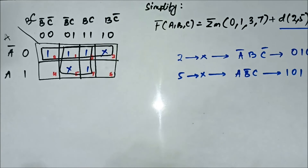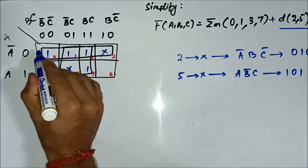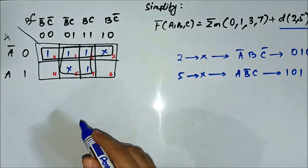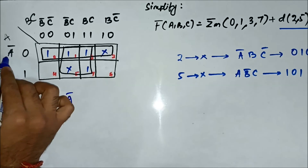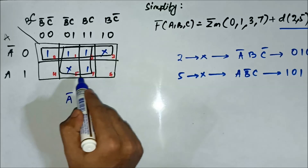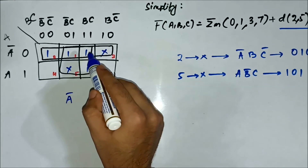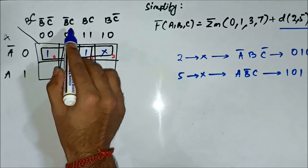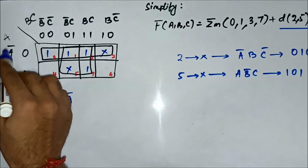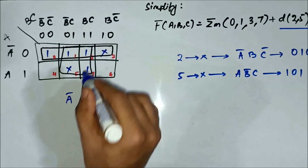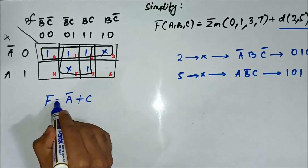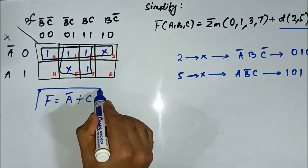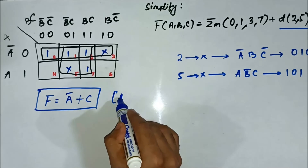Now we identify the common values from each group. For the quad involving cells 0, 1, 3, and 2: the common variable is Ā (A-bar) on the horizontal side, giving the term ĀC. For the quad involving cells 1, 3, 5, and 7: the common variable is C on the vertical side. So the simplified Boolean expression is ĀC + C, or simply Ā + C.